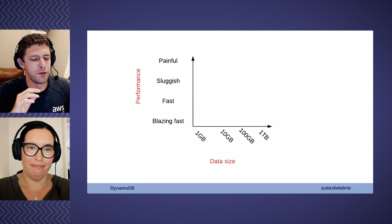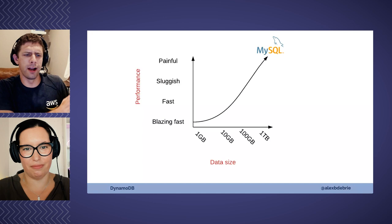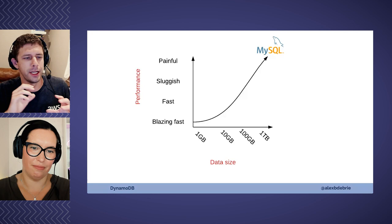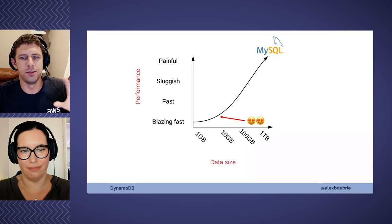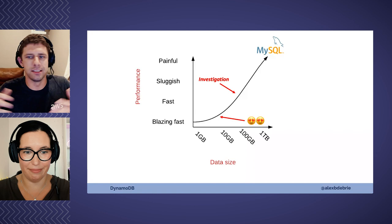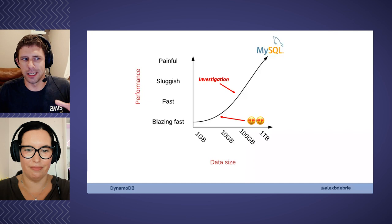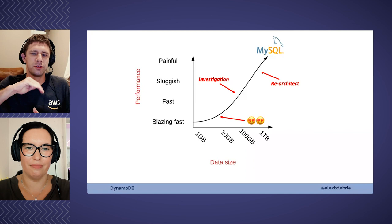In your test environment or on day one, you have a little bit of data, everything fits in memory, it's super fast and you're very happy. But then six months, a year, two years down the road, you get more data and more users. It starts to get sluggish. Users are complaining and you have to investigate — do I need to denormalize? Do I need to add more indexes? Do I need to increase my instance size? At some point it might get so sluggish that you need to re-architect your application. So you see that performance curve with relational databases.